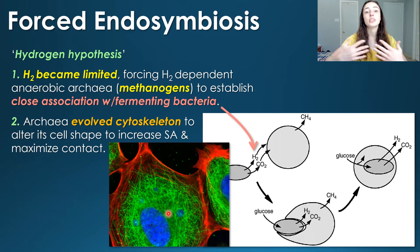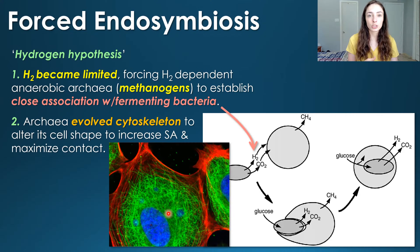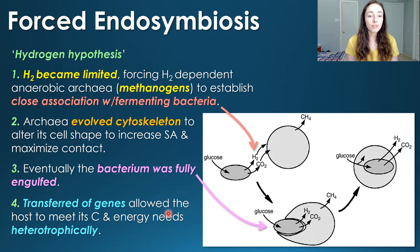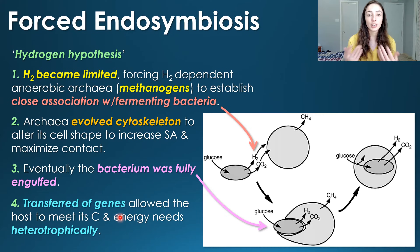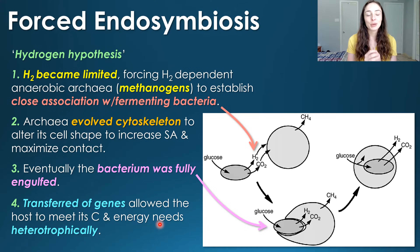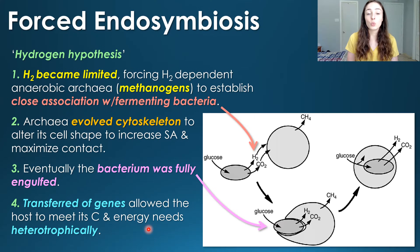You can now see why the evolution of a cytoskeleton was probably really important before the rest of the evolutionary steps toward eukaryotic cells. Eventually the bacterium was fully engulfed by the host archaea. Lateral gene transfer was rampant back then, especially among communities living next to each other, and it was probably even easier when one prokaryote was engulfed by another. At that point, the transferred genes allowed the host to meet both its carbon and energy needs, as well as the needs of its engulfed symbiont cell heterotrophically.